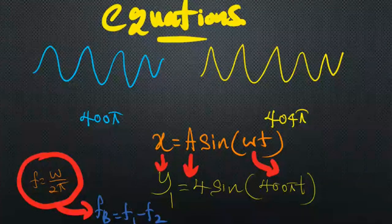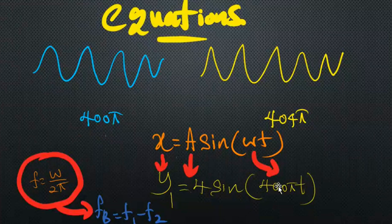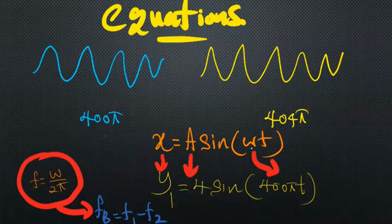The frequencies of the two waves must be almost equal — the values should be close. From the given equations, we can find the frequency. The first equation is y₁ = 4 sin(400πt). This should be familiar — it follows the form x = A sin(ωt) from simple harmonic motion. Here, A is the amplitude, 400π is omega (ω), and t is time.